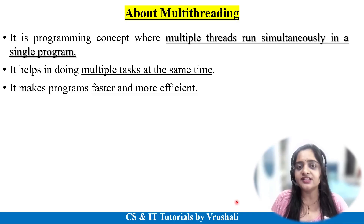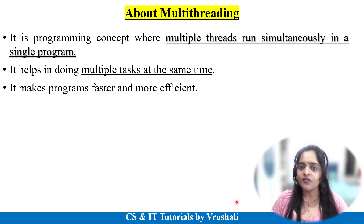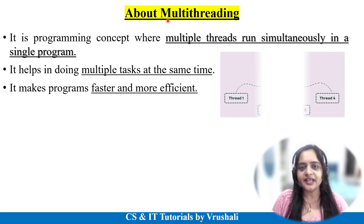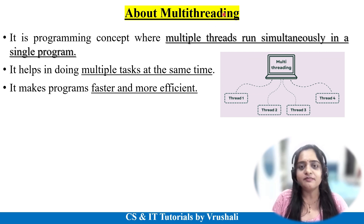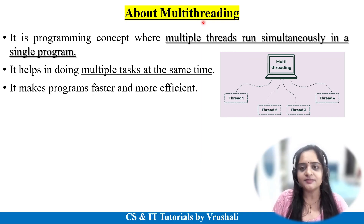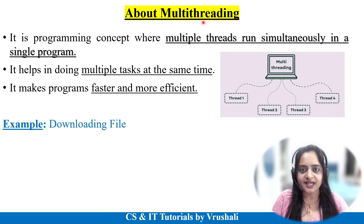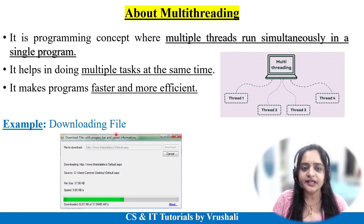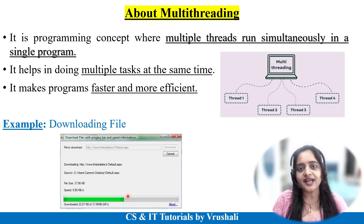The next topic is multi-threading. Up to this point we have discussed what is a thread, what is a user level thread, and what is a kernel level thread. Multi-threading means multiple threads work simultaneously. Multiple threads work parallelly on the same application, on the same process — this is called multi-threading. For example, suppose you want to download a particular file: one thread handles the location of the downloaded file, another thread handles the progress bar, and another thread handles background applications.